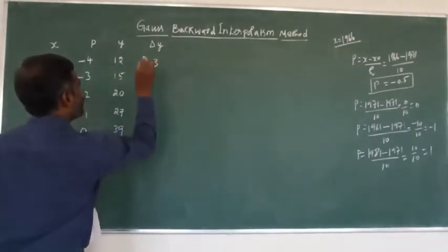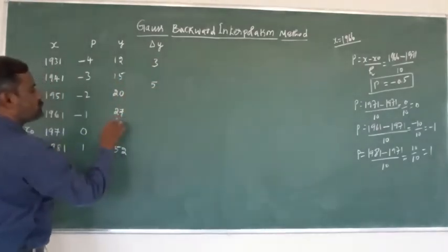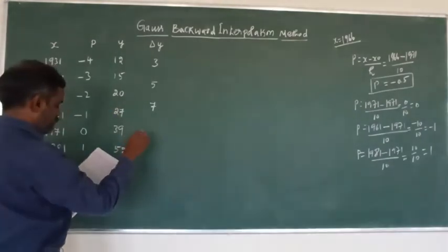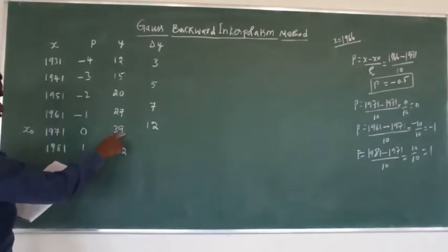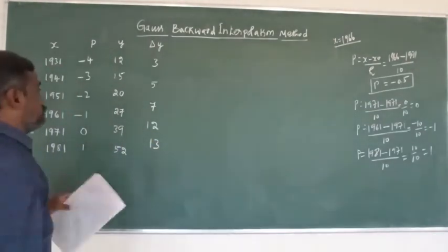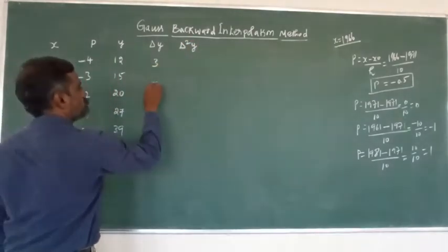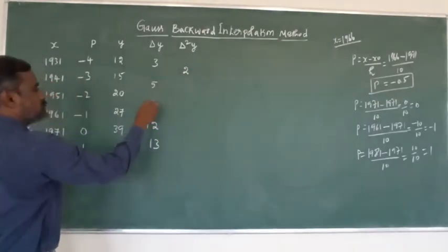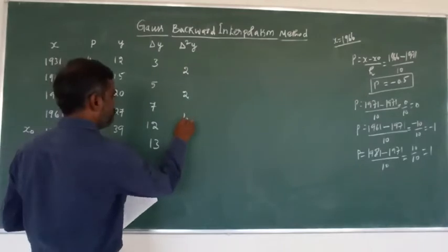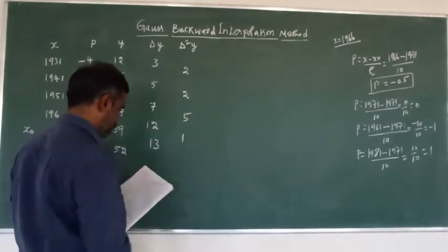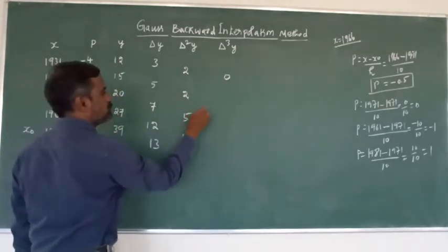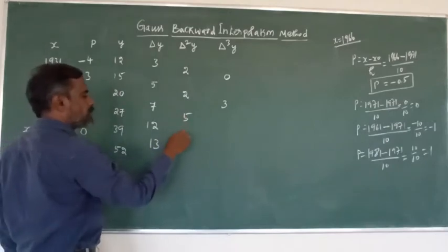For the first differences: 20 − 15 = 5; 27 − 20 = 7; 39 − 27 = 12; 52 − 39 = 13. For delta squared: 5 − 3 = 2; 7 − 5 = 2; 12 − 7 = 5; 13 − 12 = 1. For delta cubed: 2 − 2 = 0; 5 − 2 = 3; 1 − 5 = −4.